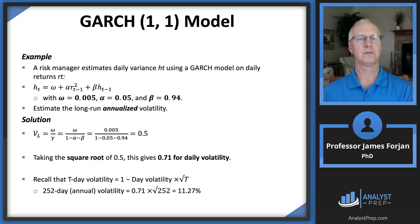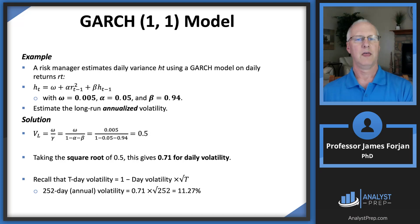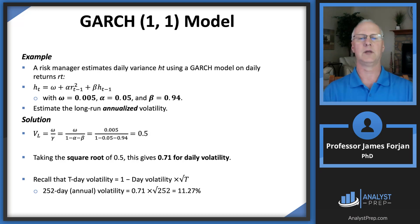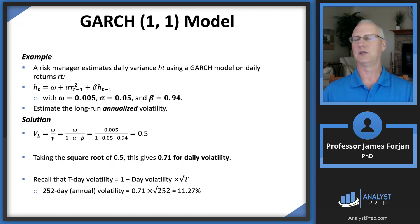Let's take a quick example: estimating daily variance using the GARCH model. Given: long-run variability = 0.005, alpha = 0.05, beta = 0.94, and we want to estimate long-run annualized volatility. Using the formula, we get 0.5; take the square root to get 0.71. Since we're working on a daily basis, we multiply by the square root of 252 trading days per year.